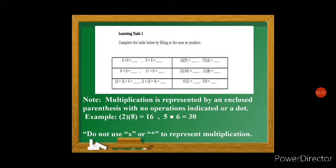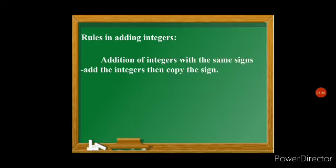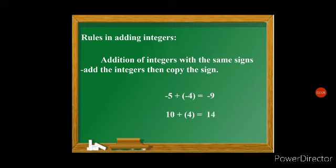Now let us review the rules in adding integers. For addition of integers with the same sign, add the integers then copy the sign. We have negative 5 plus negative 4: since both are negative, 5 plus 4 is 9, so the answer is negative 9. For 10 plus 4, the answer is 14. Always remember that if an integer doesn't indicate any sign, it is considered positive.